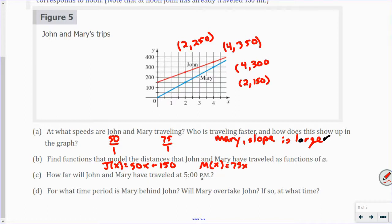How far will John and Mary have traveled at 5 p.m.? Well, remember noon is 0. So, this is 1, 2, 3, 4, 5. So, all I have to do is plug 5 in. So, we want John at 5, which if we just plug that in, he's at 400. And Mary of 5, she's at 375. Okay, so getting closer and closer and closer. You can kind of see that they're going to intersect. They start at 150 and this distance gets narrower and narrower and narrower.